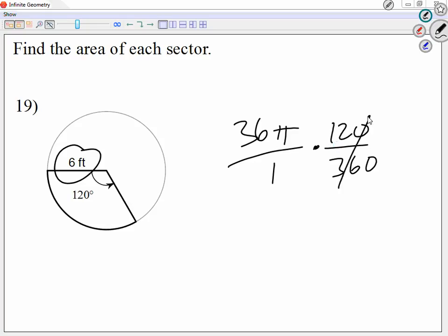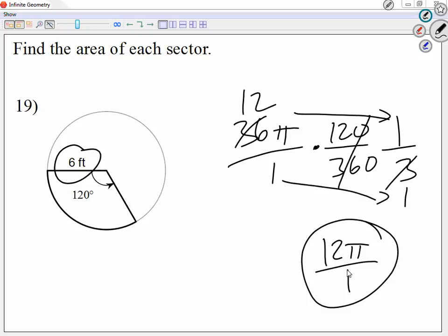Alright, so in my case, let me simplify. 120 over 360, let me call that 1 over 3. I simplify, I divide each by 120. Diagonal, 36 and 3, I can simplify that as well. Let me divide each by 3. So I'm going to get 12 and 1. Now when I multiply straight, on the top I have 12π times 1. So on the top I have 12π. At the bottom I have 1 times 1. So 12π over 1.